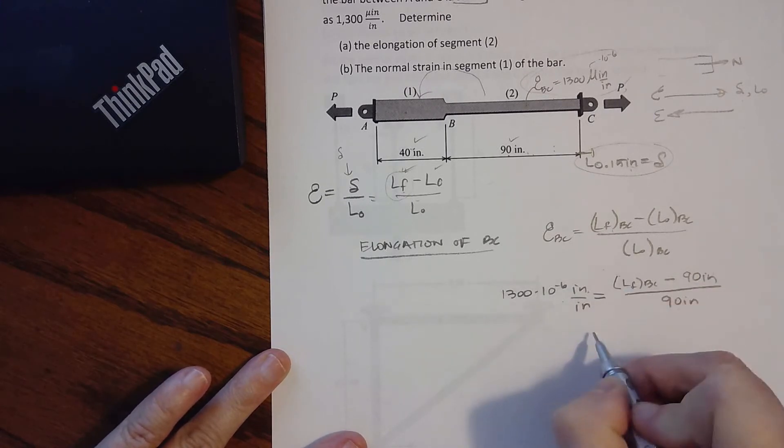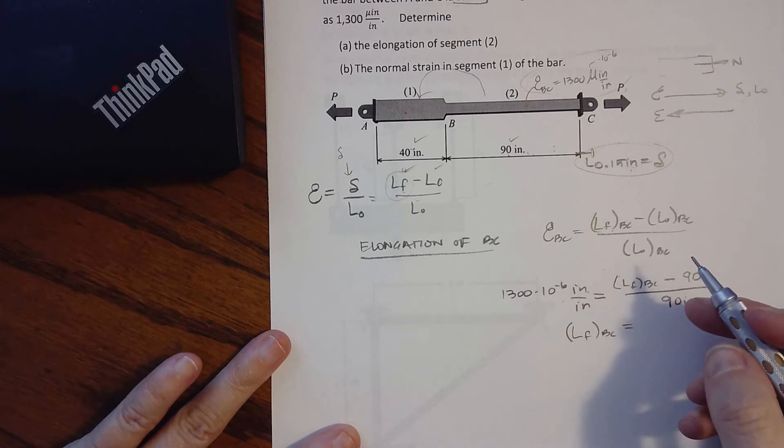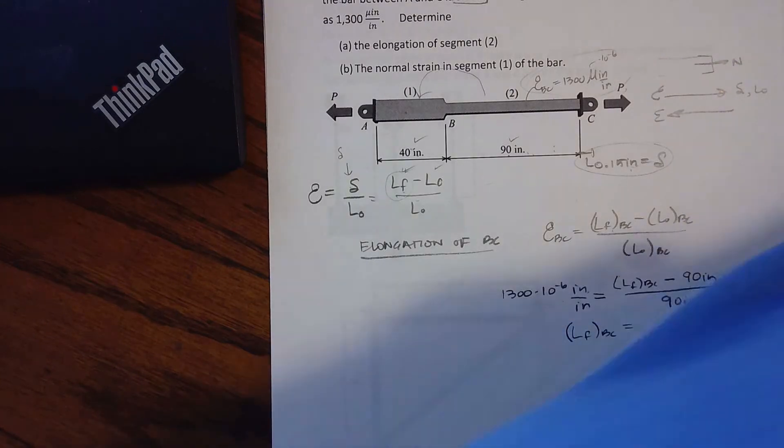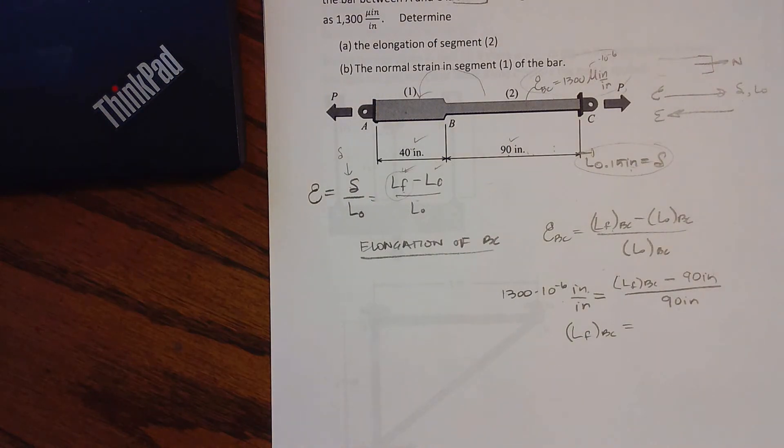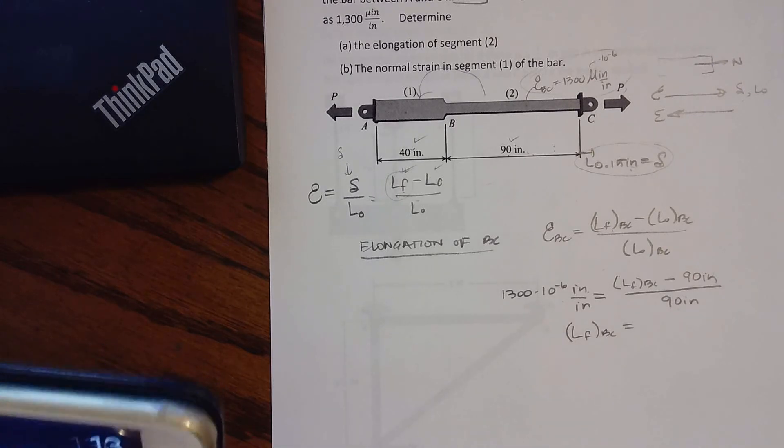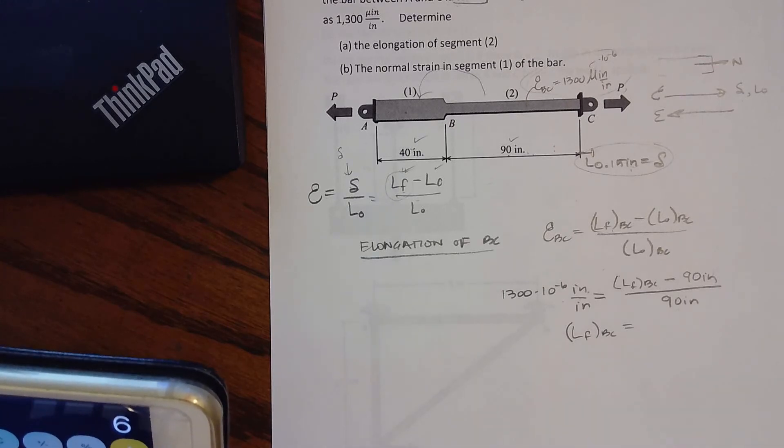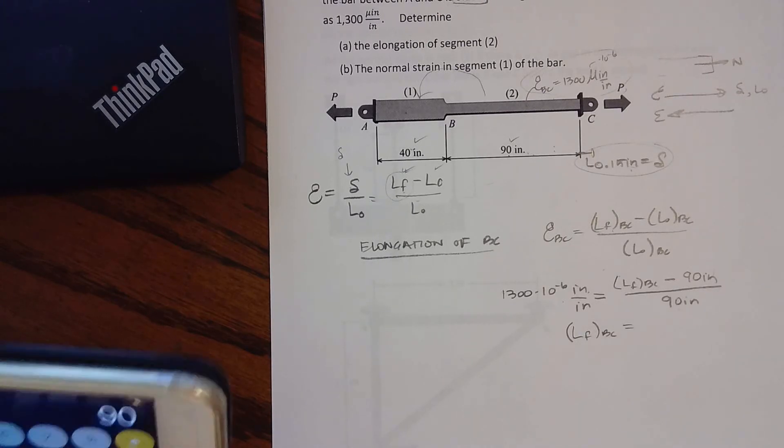90 inches. So I can multiply by 90 and then add 90 and my final length from B to C. That final length - let me find my calculator. Calculator, can't find my calculator, should already have that up. Sorry about that. Okay, so let's go back to our calculator here. I apologize. So I have 1300 times 10 to the negative 6.